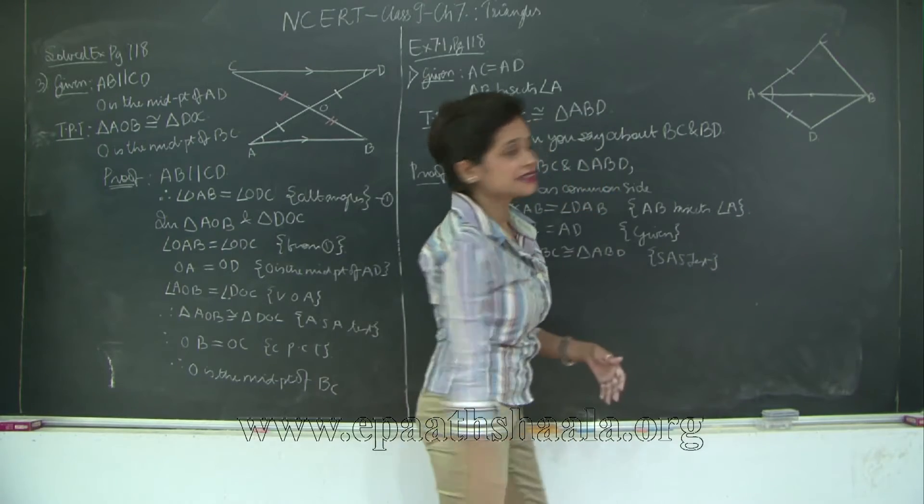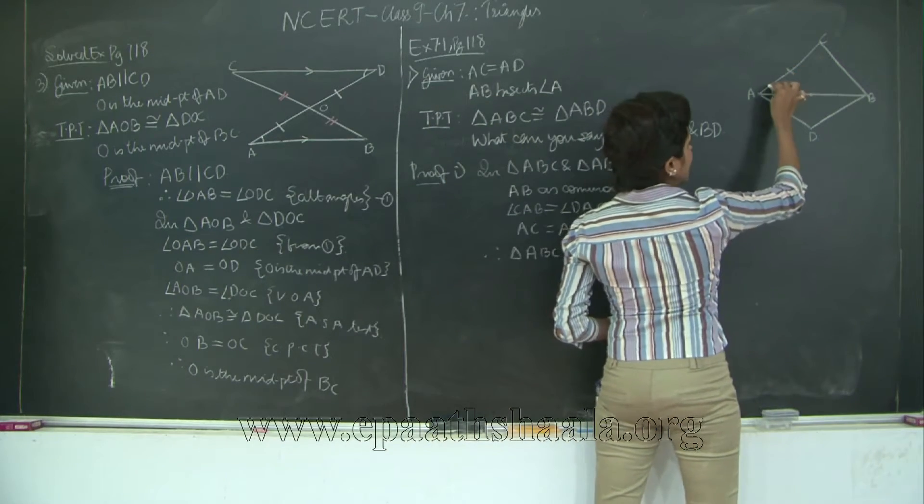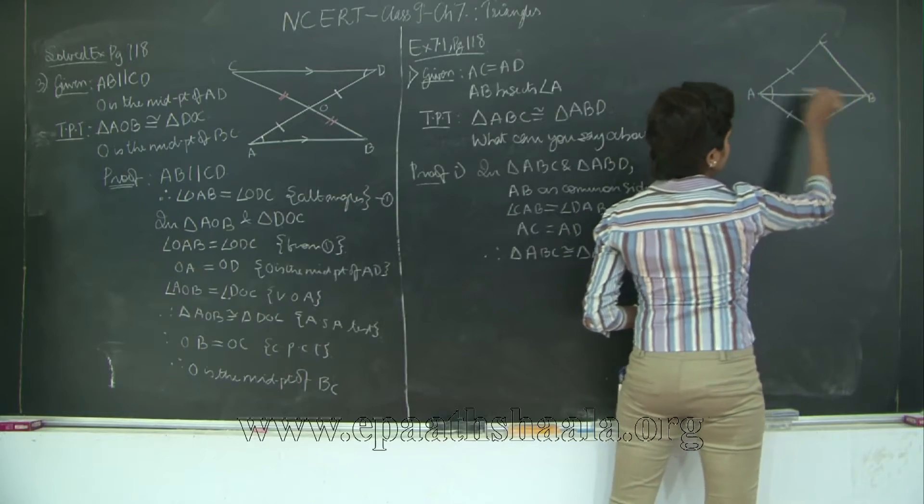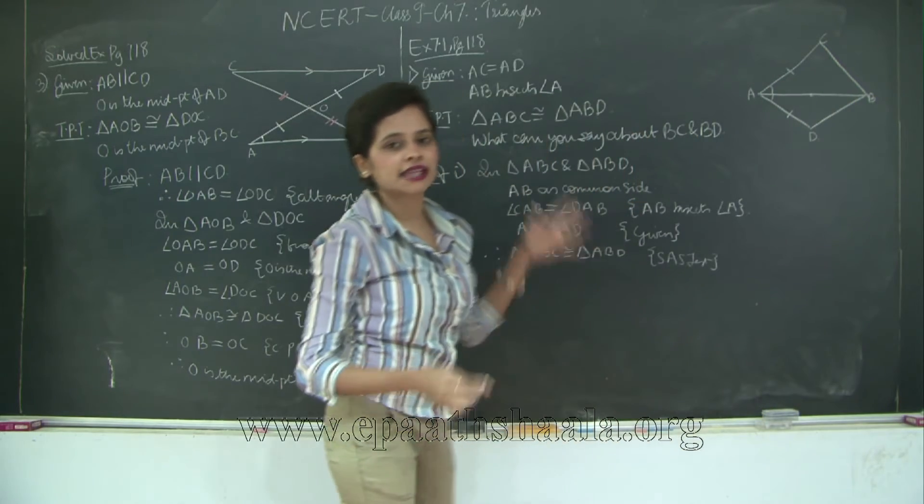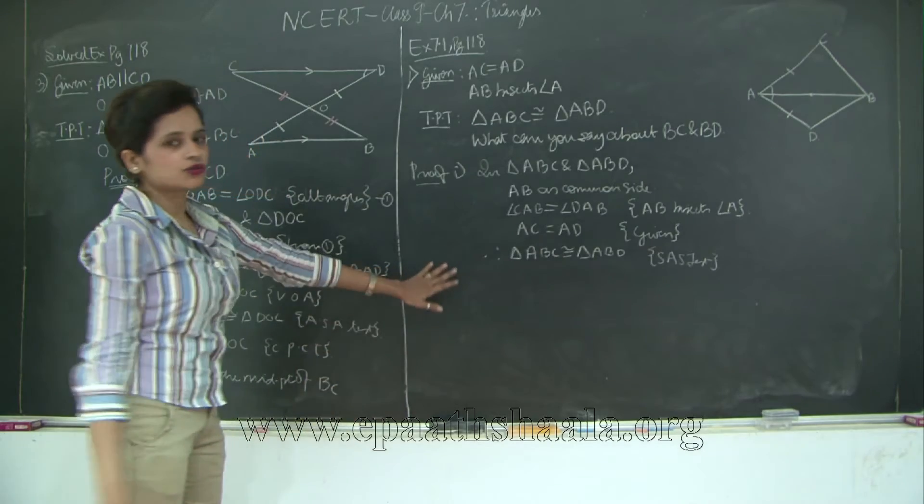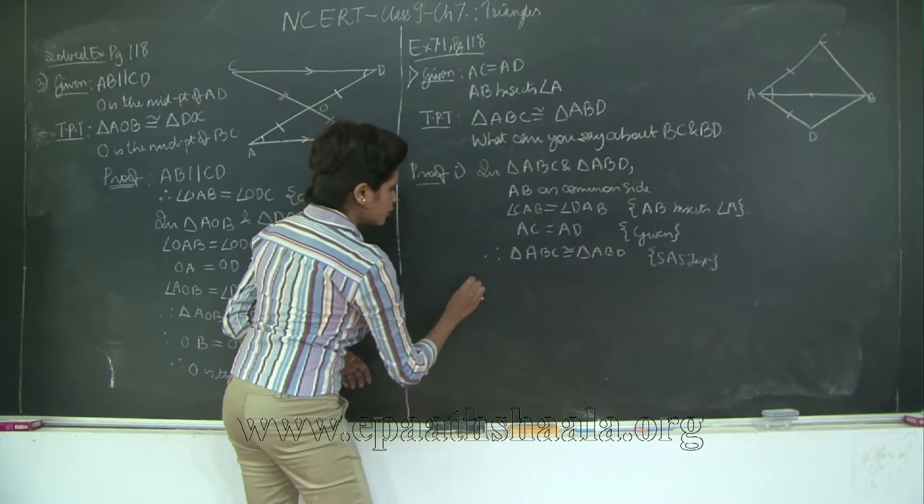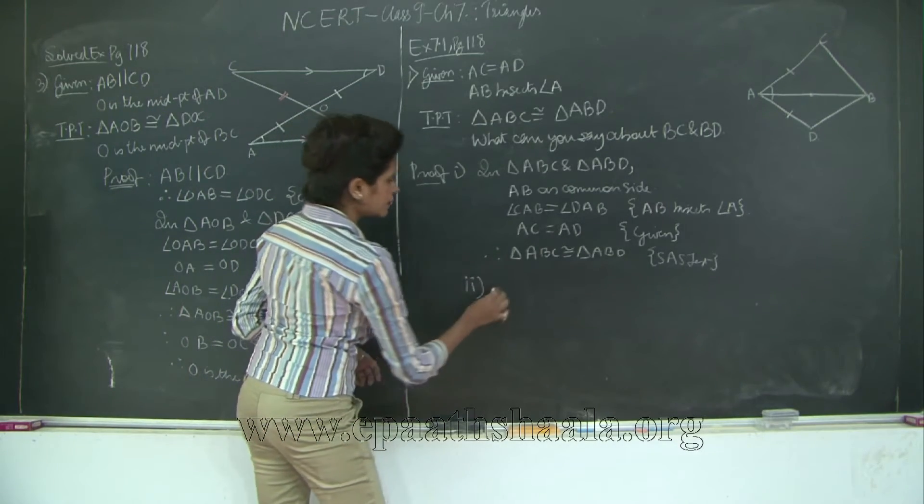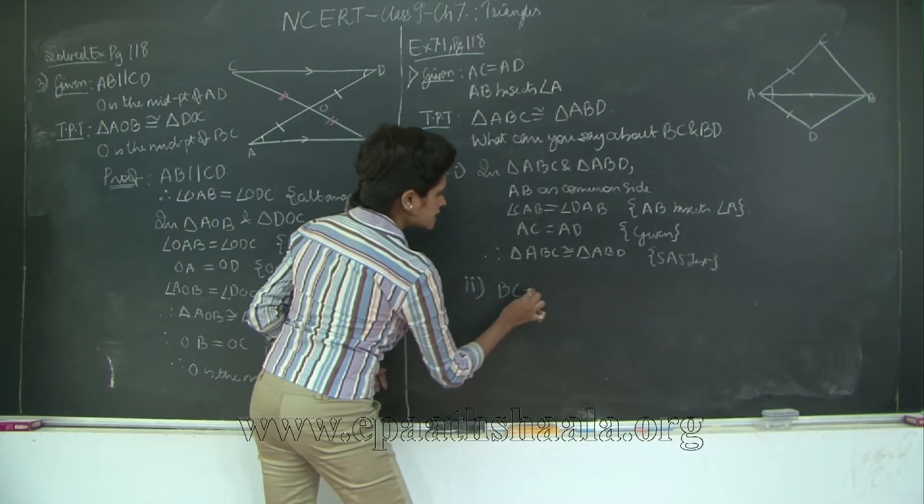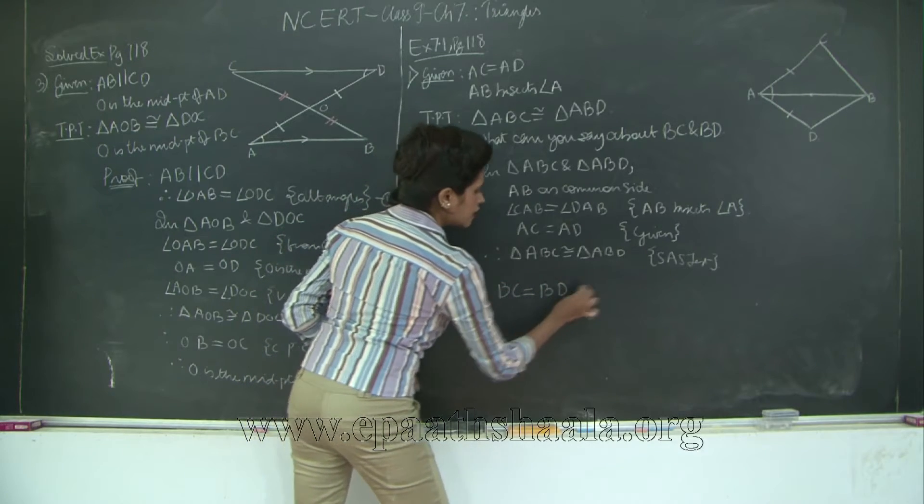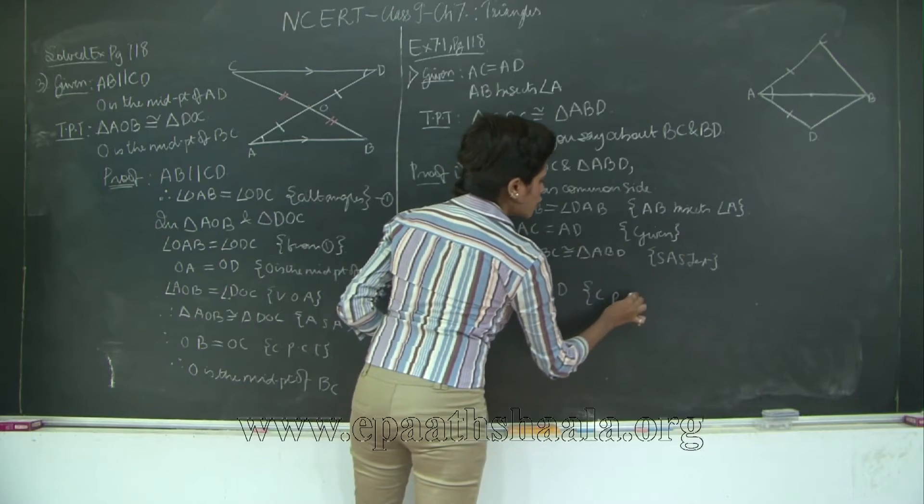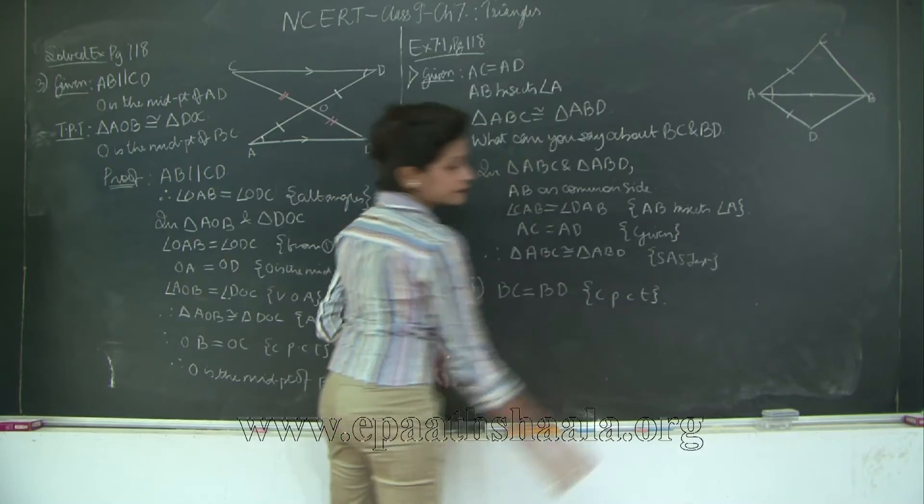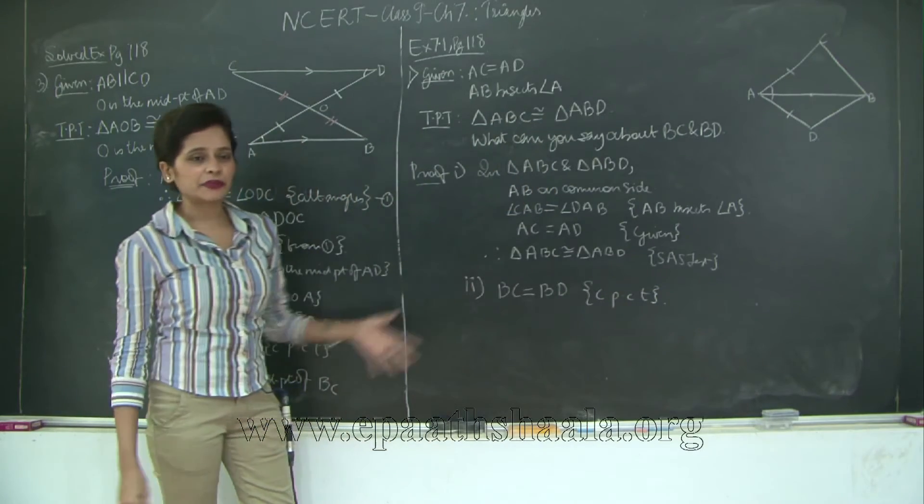Therefore I have triangle ABC is congruent to triangle ABD by SAS test. Why SAS test? I have a side, I have an angle in between and I have a side. So an angle between two sides. Therefore side, angle, side. The two triangles are congruent. Therefore BC is equal to BD corresponding parts of congruent triangles. Pretty simple isn't it?